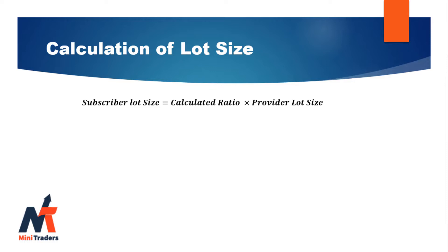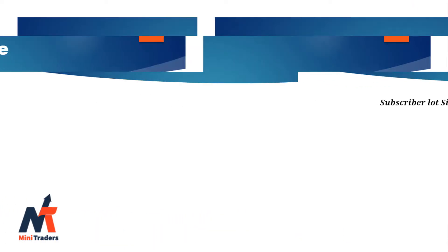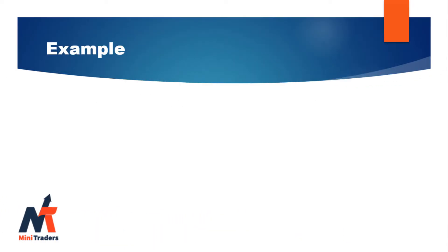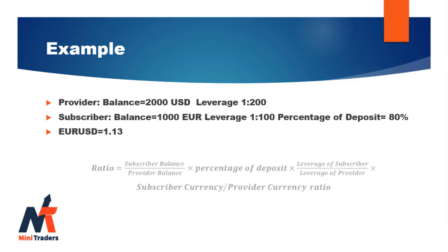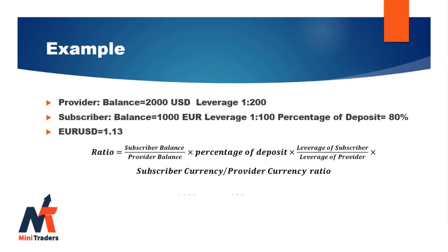Let's see an example. Imagine you want to copy trades of a provider who has $2,000 in his account and his account has a leverage of 1:200. Your balance is 1,000 euros, your leverage is 1:100, and you set your percentage of deposit to 80%. At this time, suppose the EUR/USD exchange rate is 1.13.